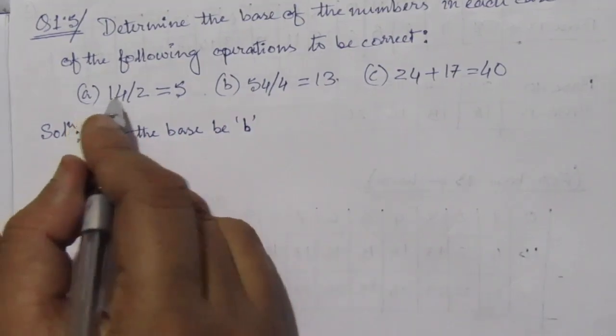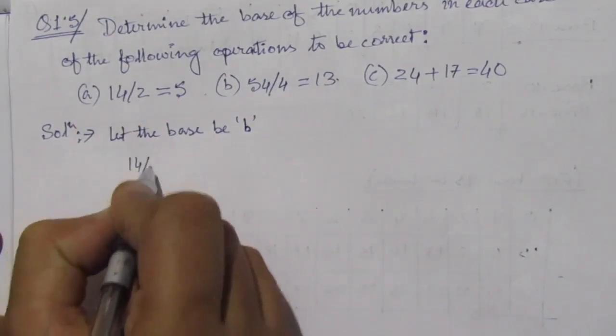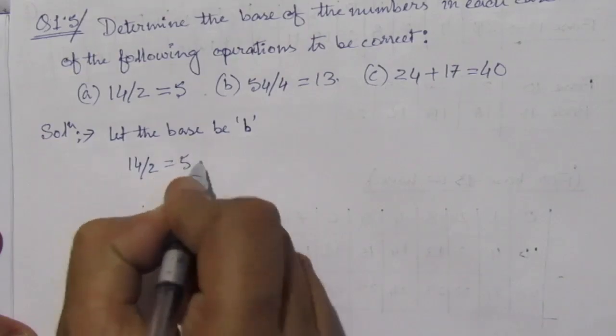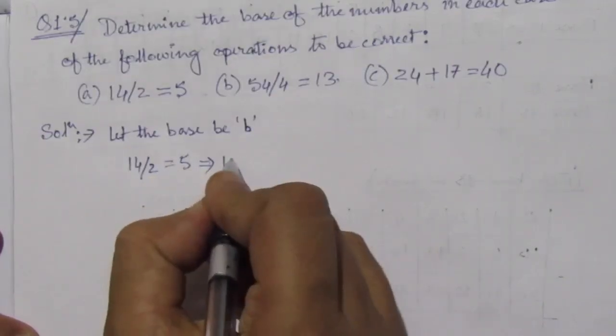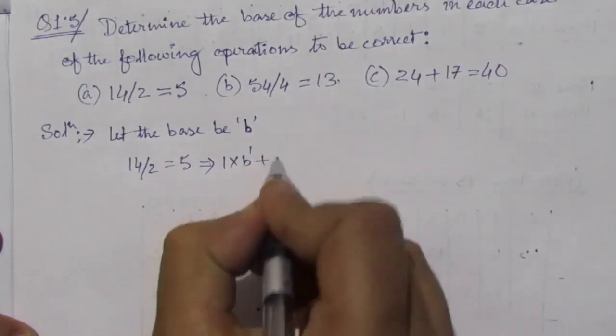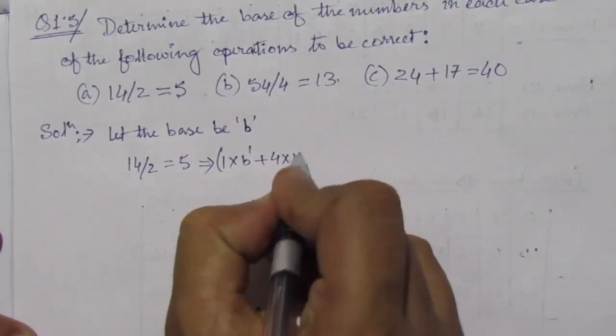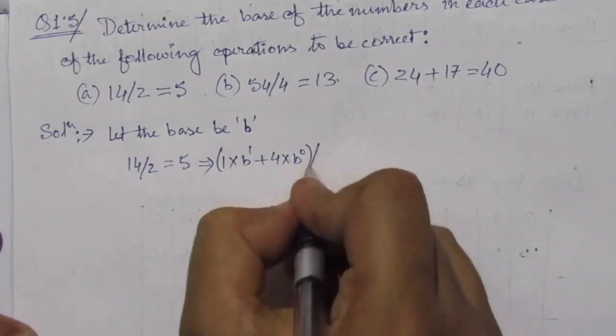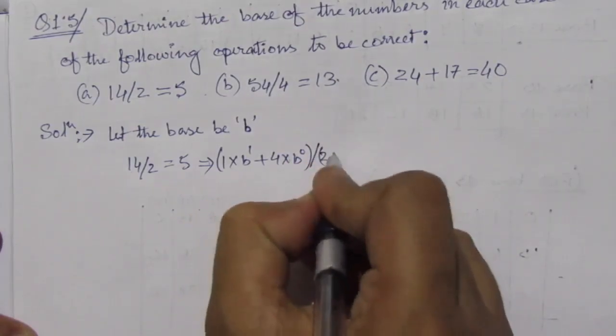Here we can write it as 14/2 = 5. So I can rewrite it as 1 × b^1 + 4 × b^0 divided by 2 × b^0 equal to 5 × b^0.